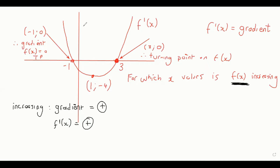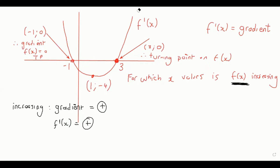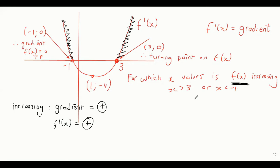This graph here is the first derivative, and its y-values are the first derivative. So we look and see where the y-values on this graph are positive - that would be over here and over here. And so the answer would be where x is bigger than three or where x is smaller than minus one.